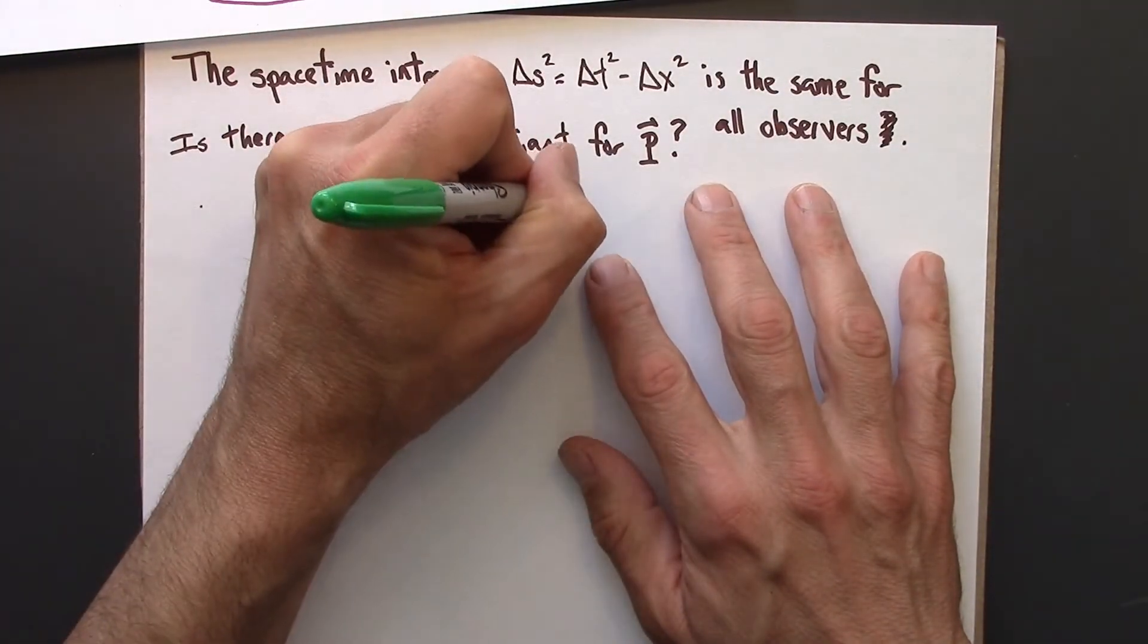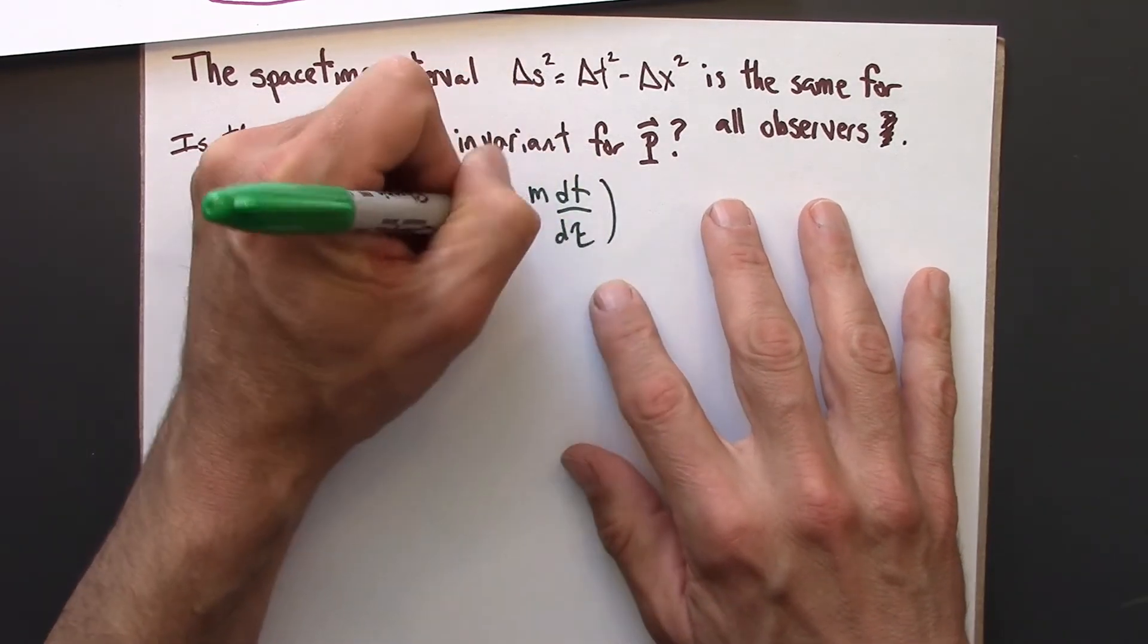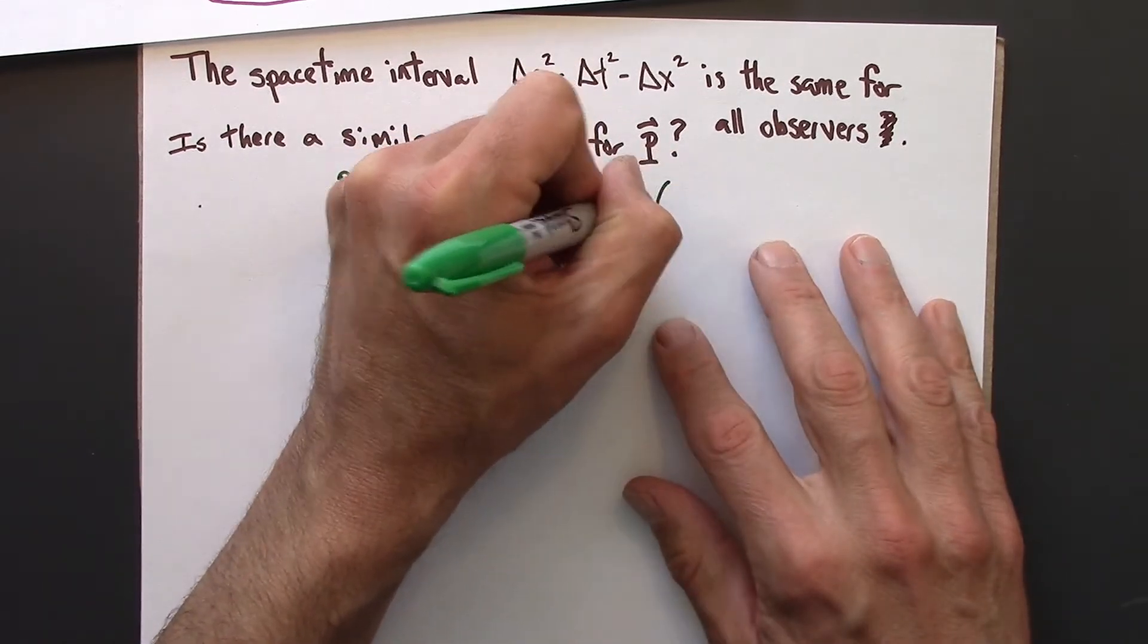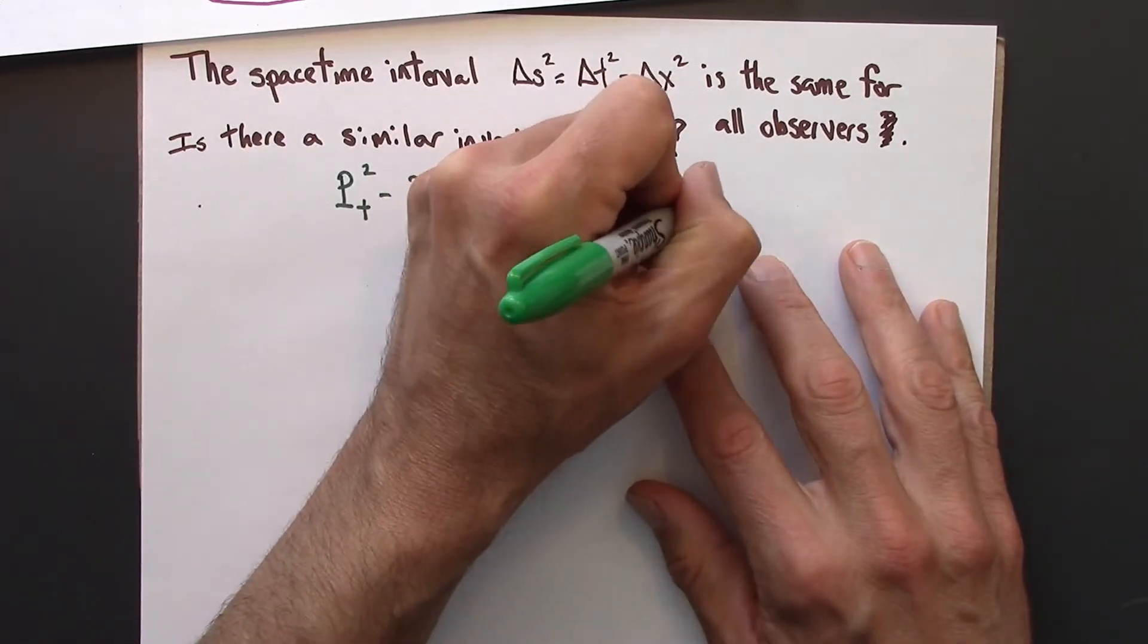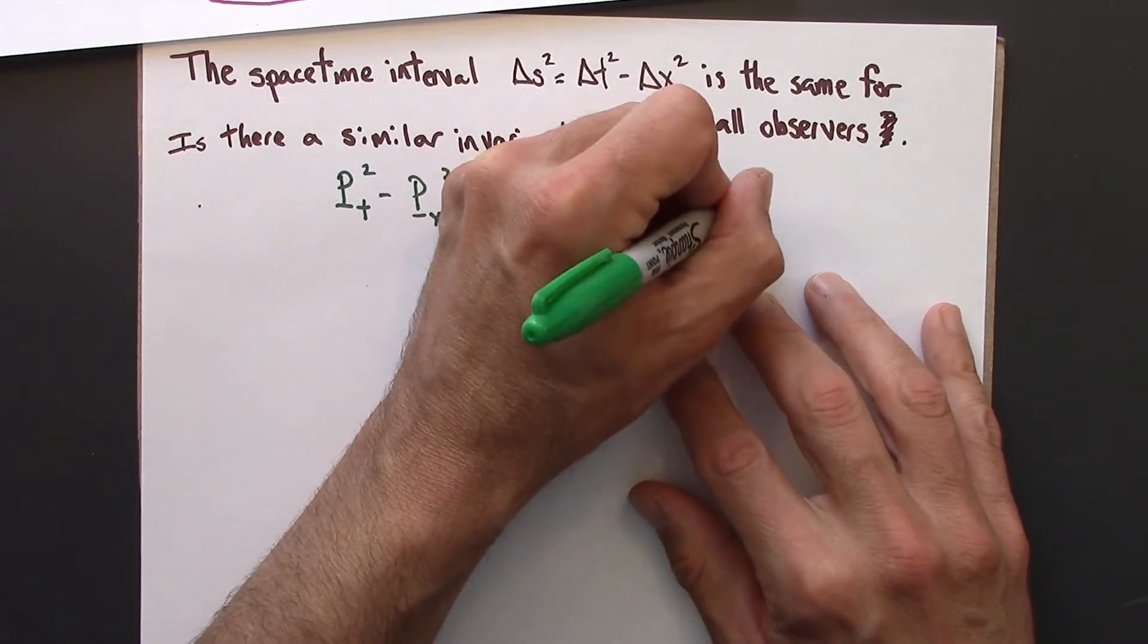So m dt/dtau squared, minus m dx/dtau squared.